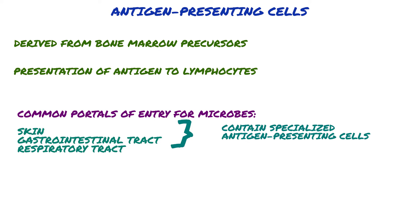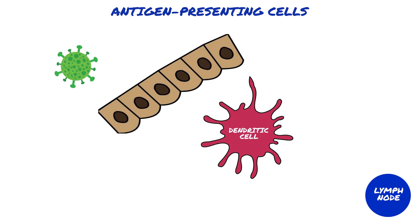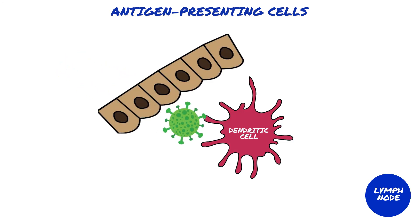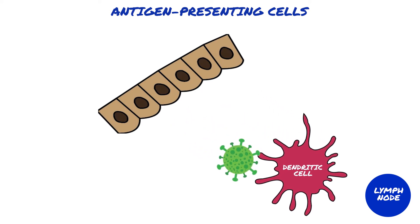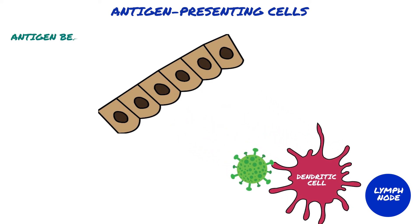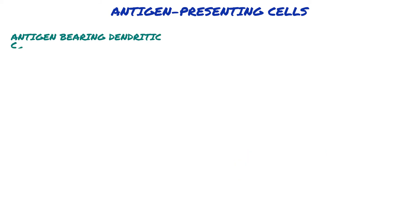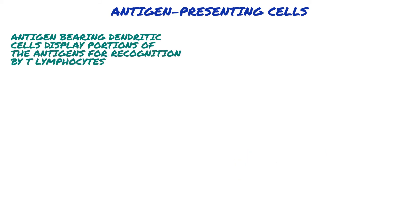This function of antigen capture and presentation is best understood for a cell type called dendritic cells, named because of their long surface membrane processes. Dendritic cells capture protein antigens of microbes entering through the epithelia and transport the antigens to regional lymph nodes, where the antigen-bearing dendritic cells display portions of the antigens for recognition by T lymphocytes.